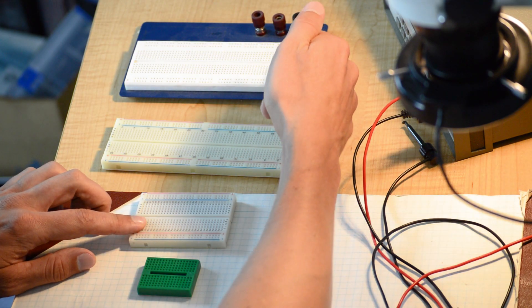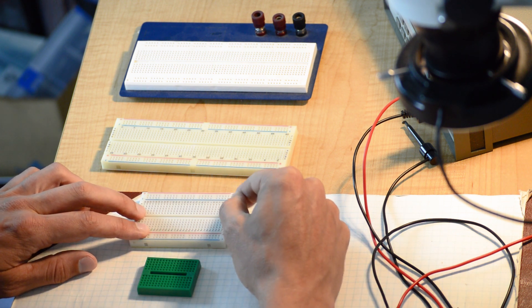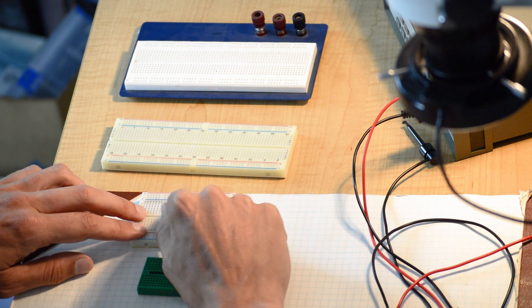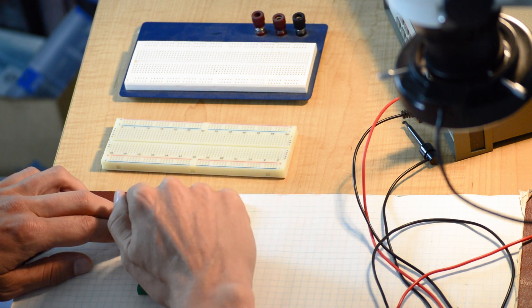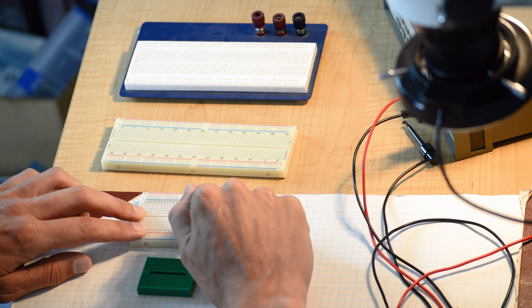Another thing to note that is only on these and not on the smallest one is there are these strips on the side. You get the plus and the minus, plus, minus. Now these are buses. So all of these plus right there are connected, all of these minus there are connected.